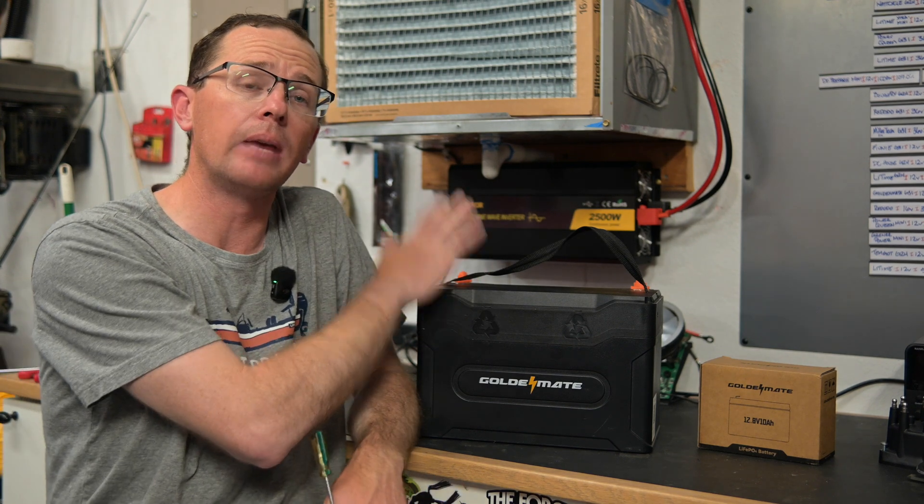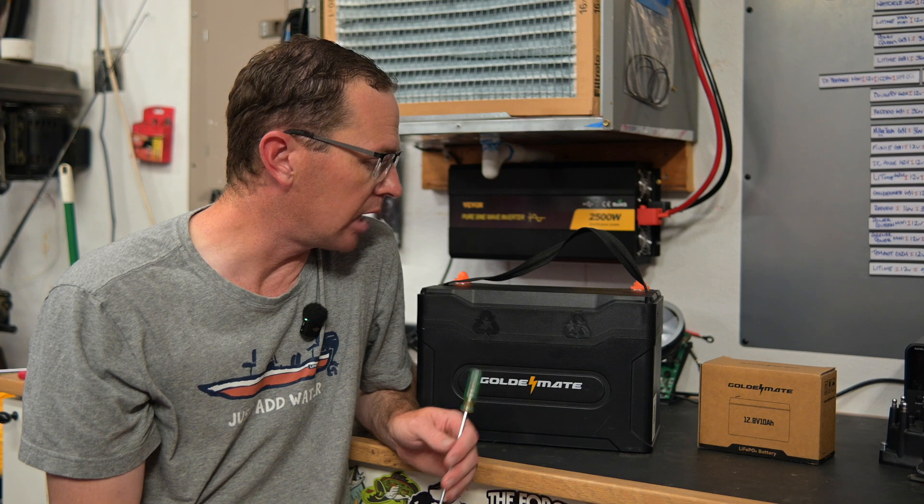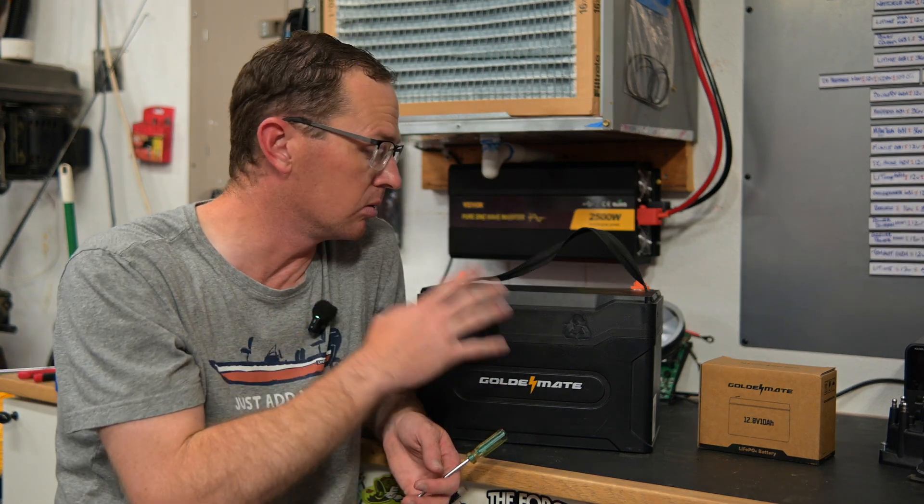How's it going everybody, today we have a Golden Mate 100 amp hour lithium battery to share with you. This is kind of an entry level Group 31, has Bluetooth which is really nice. Let's talk through some of the overall specs.